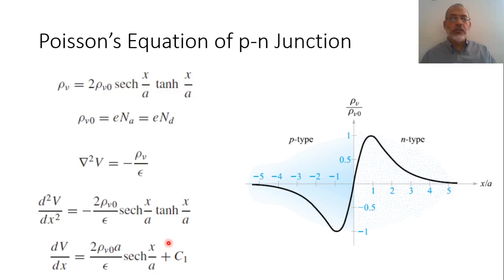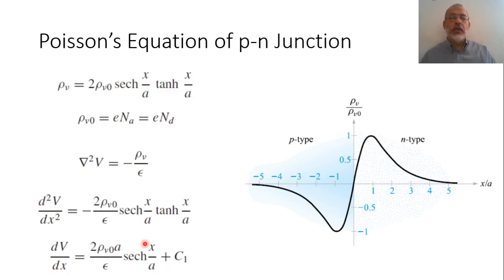From the boundary conditions, we can obtain the potential at every point, the electric field at every point, the surface charge density at the boundaries of the problem, and we can obtain the capacitance. So the only difference here is the presence of the volume charge density.